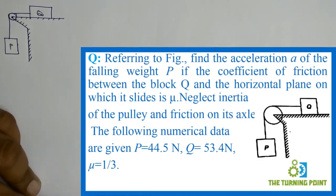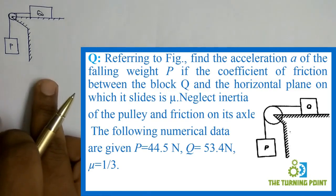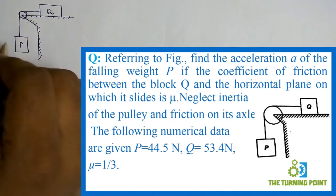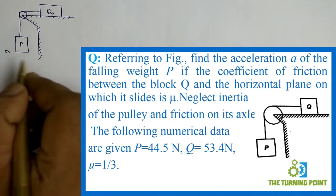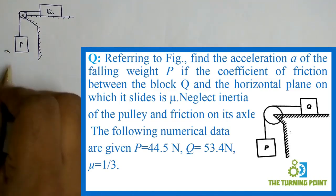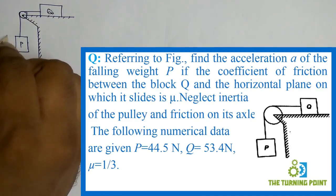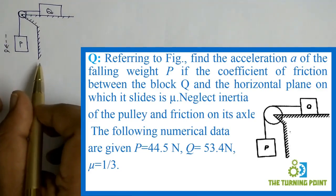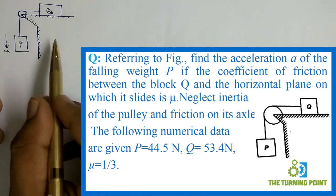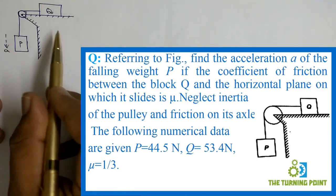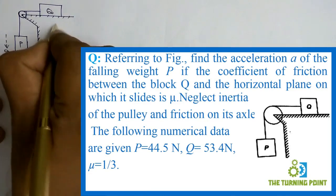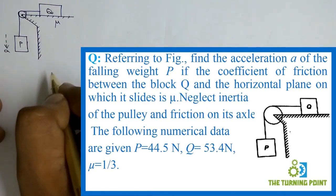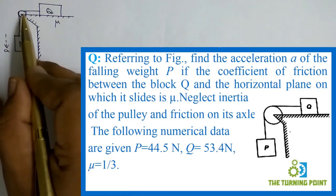Referring to the figure, find the acceleration a of the falling weight P. This is the falling weight P, and a is the acceleration for this block. Falling weight means it is going to move in the downward direction, so acceleration will be downwards. The coefficient of friction between block Q and the horizontal plane on which it slides is mu. Neglect the inertia of the pulley and friction on its axle.